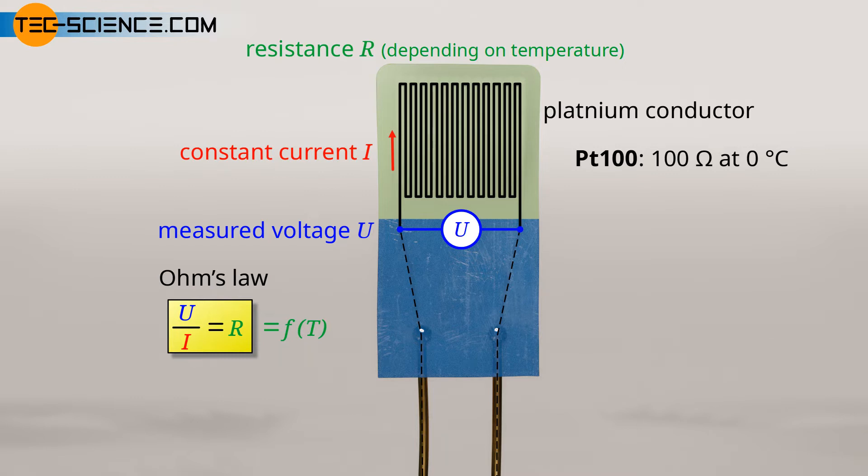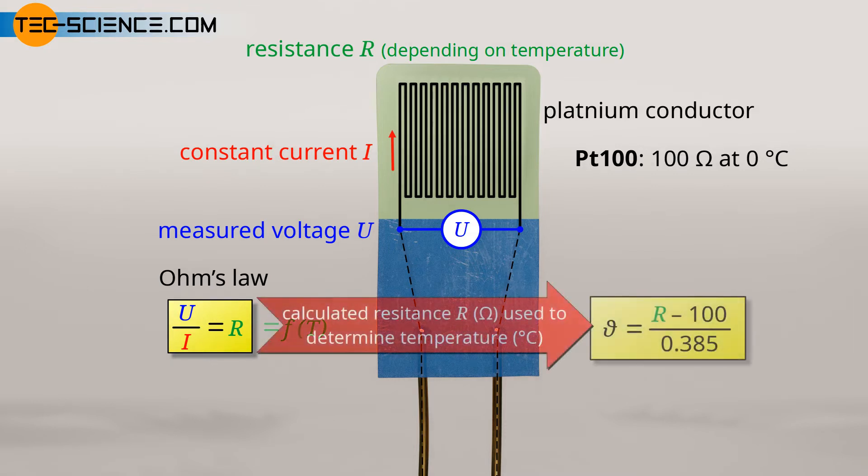In the measuring range between 0 degrees Celsius and 100 degrees Celsius of a PT100, the temperature can be determined as follows using the calculated resistance based on the measured voltage at constant current.